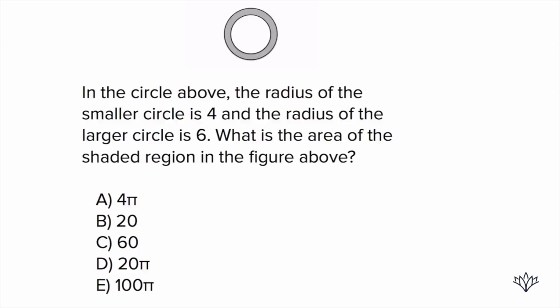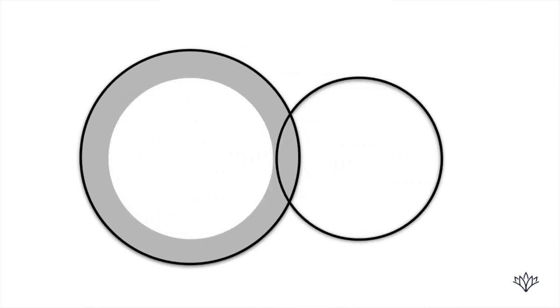Sometimes what we have to figure out is the area within part of a figure. In the circle above, the radius of the smaller circle is four and the radius of the larger circle is six. What's the area of the shaded region in the figure above? We've got to figure out the area of the big circle and the area of the small circle, and if we subtract the small from the big, we'll be left with the shaded area.